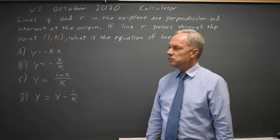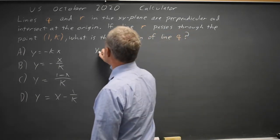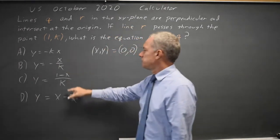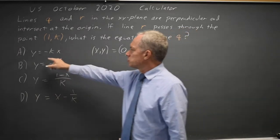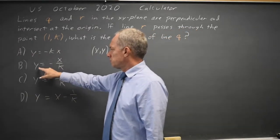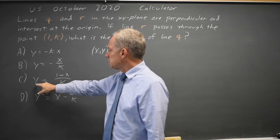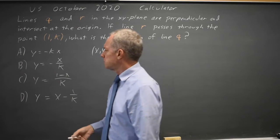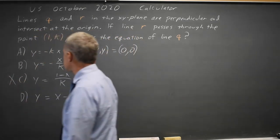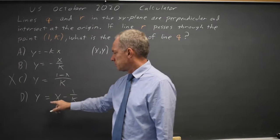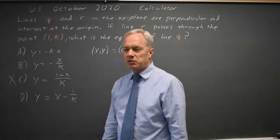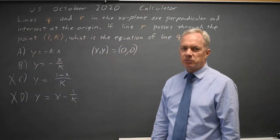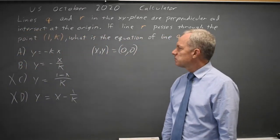First of all, I'm going to use the fact that they pass through the origin, which means that the point (0, 0) has to be on the correct equation of line Q. For choice A, that's 0 equals 0. For B, 0 equals 0 — both work. Choice C: 0 equals 1 minus 0 over K, which gives 0 equals 1 over K — that's not true, so choice C is wrong. Choice D: 0 equals 0 minus 1 over K, so 0 does not equal negative 1 over K — choice D is wrong. I only have to consider choices A and B, because those are the only ones that pass through the origin.